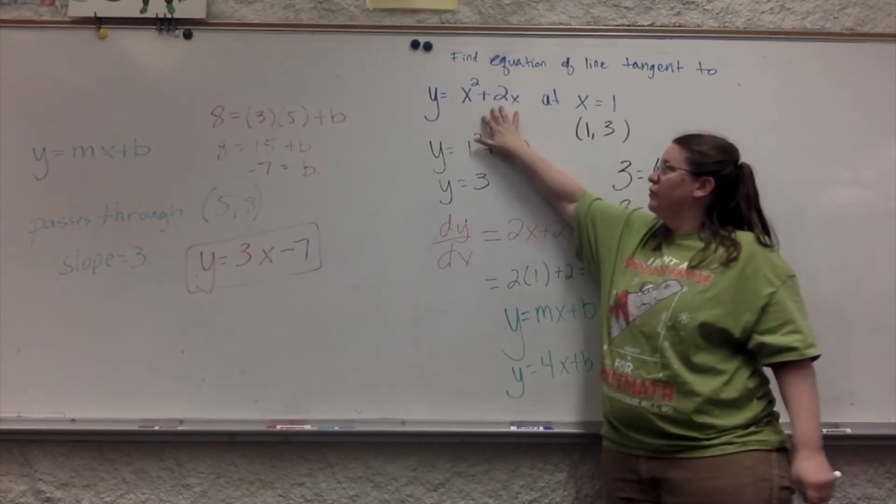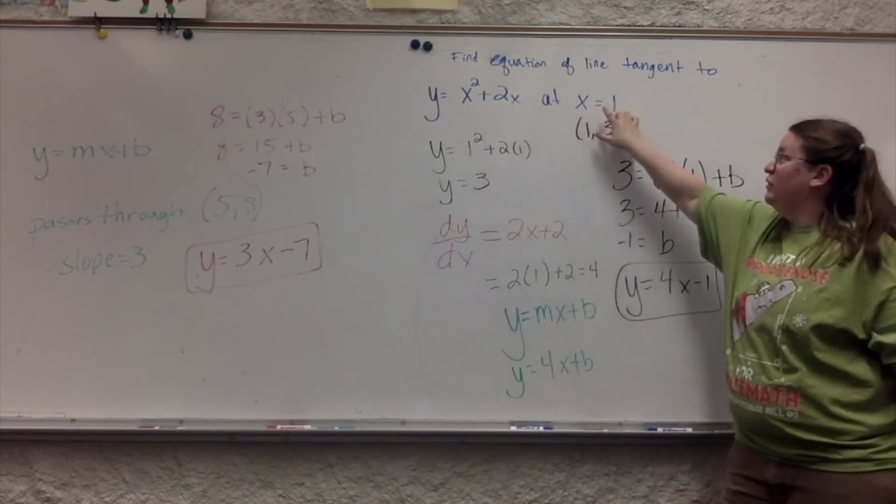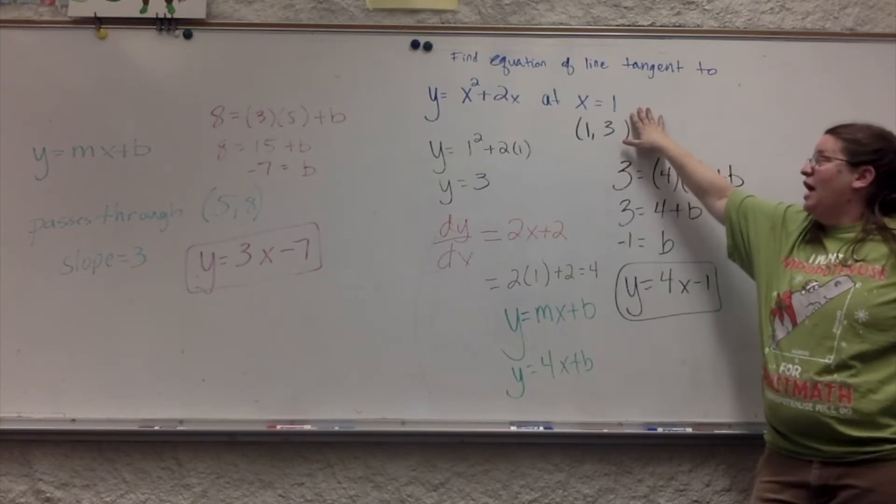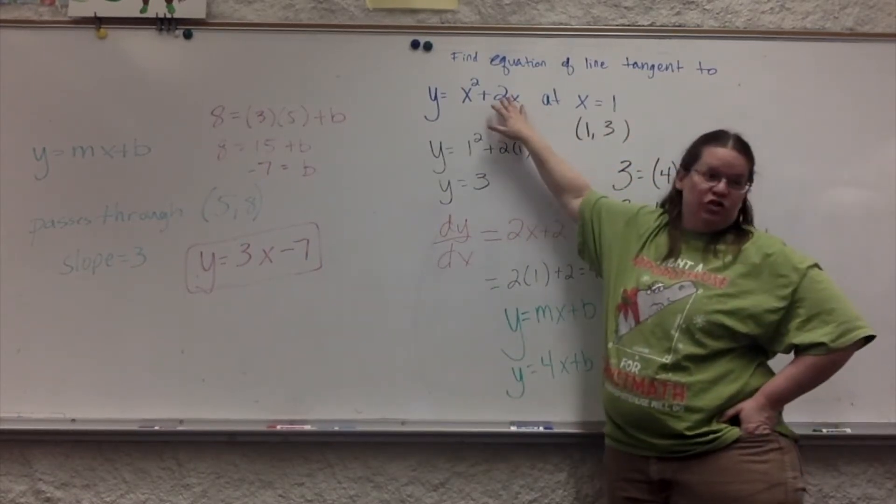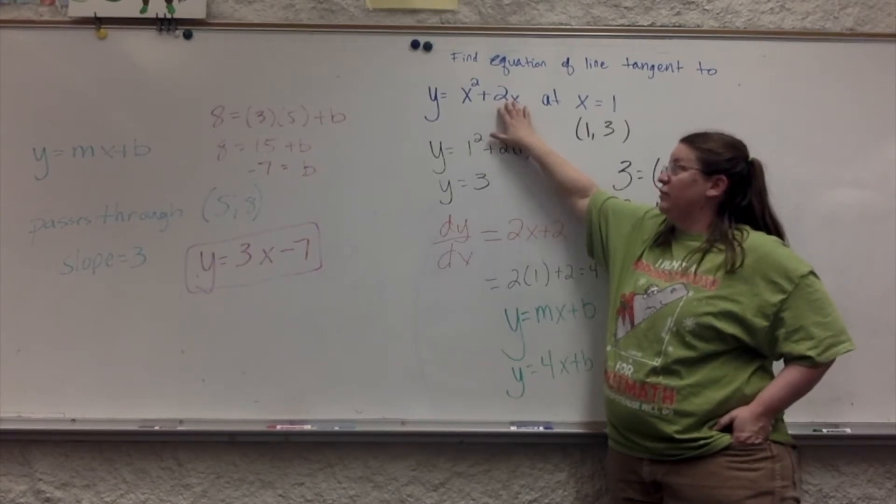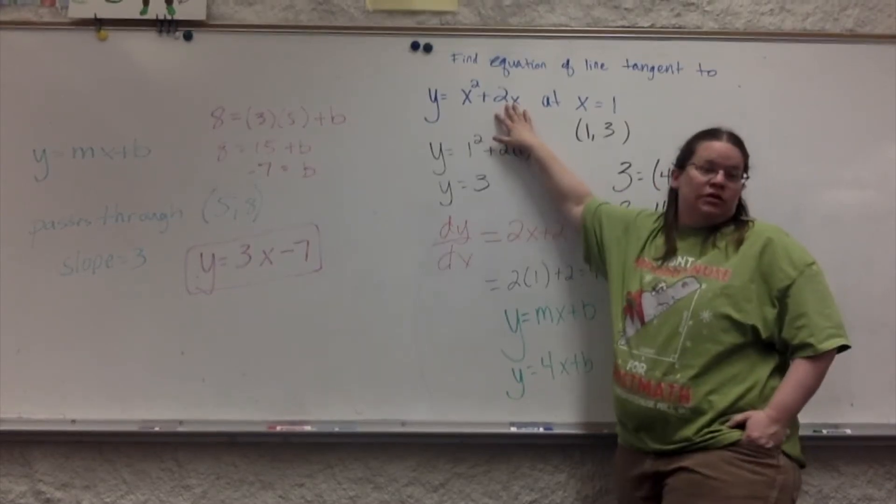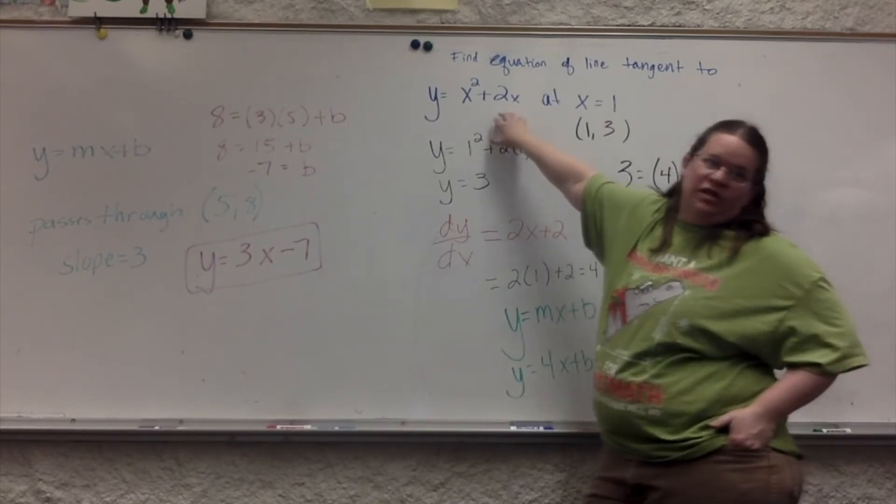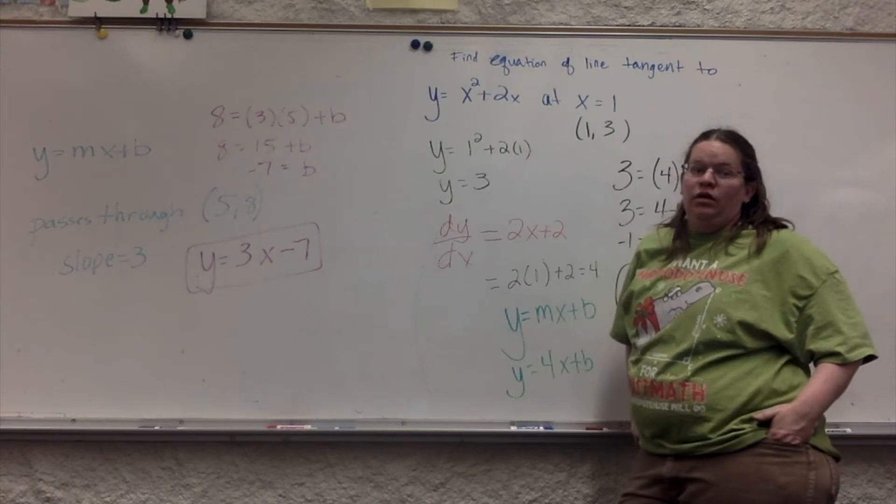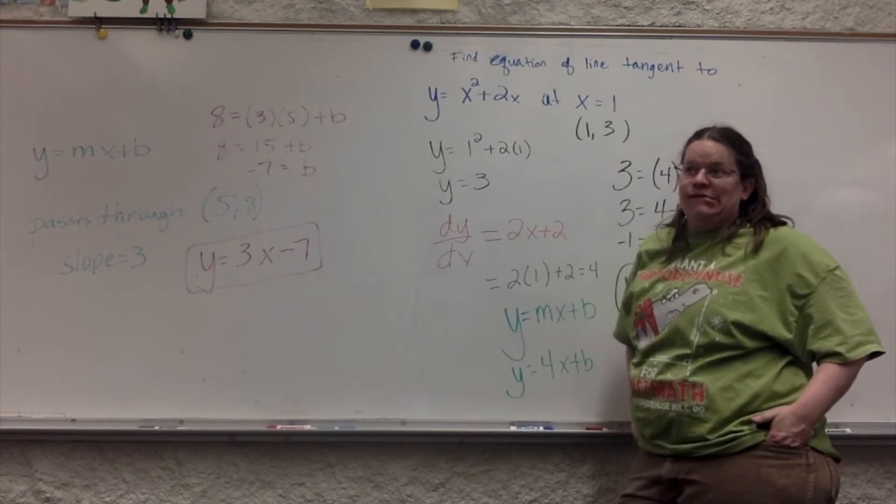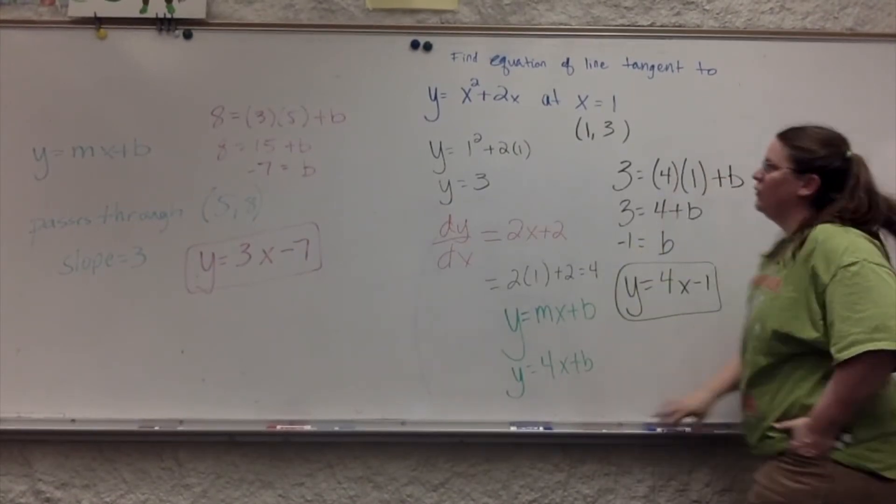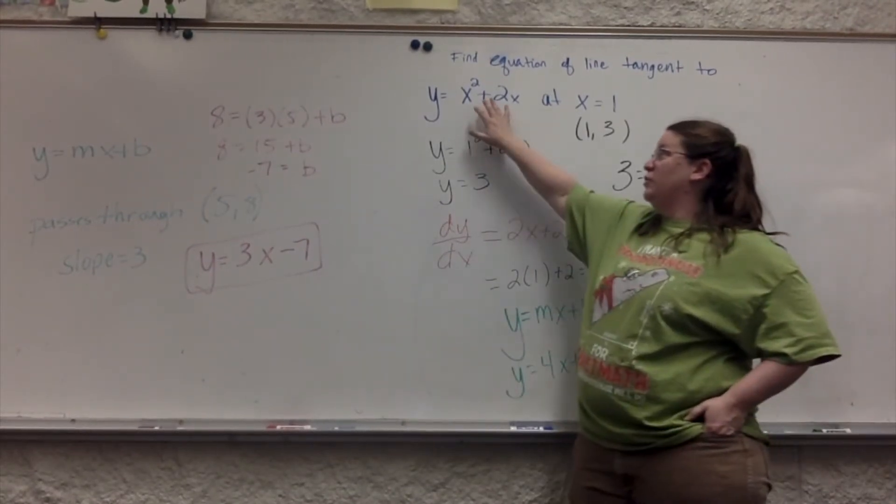But what happens is, they give you a function. So, they either have to give you x and y or give you a way of finding x and y. And then, with that function, this is the new stuff for today. You have to do the derivative, because that's how we find the slope now.